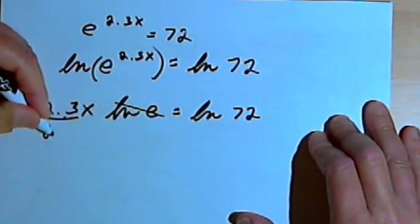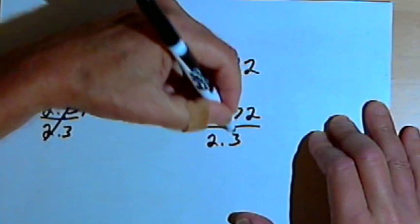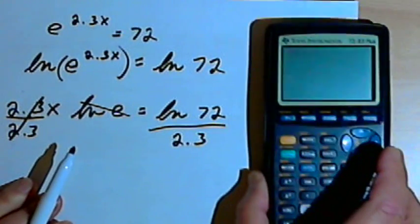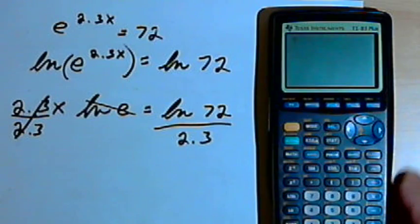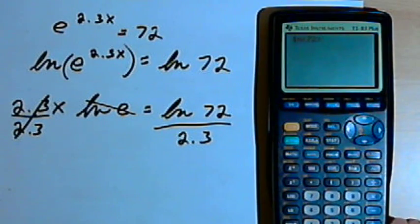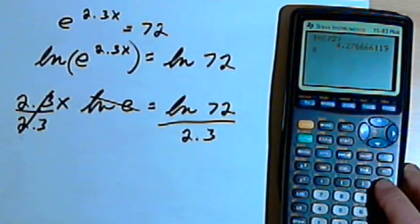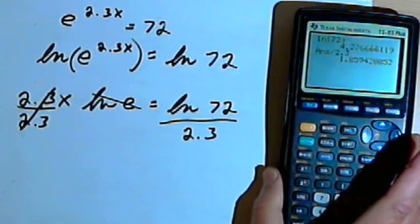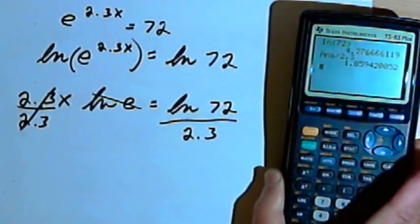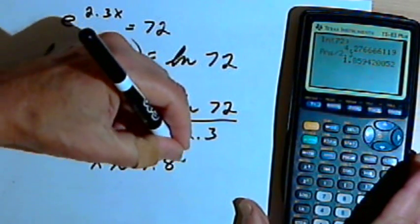So I'll just divide both sides by 2.3 to get x all by itself. I've got x equals the natural log of 72 over 2.3. We'll just use the calculator at this point. The ln of 72 is approximately 4.28, and we just divide that by 2.3, which gives us 1.8594. We'll round that to 1.86. So x equals approximately 1.86.